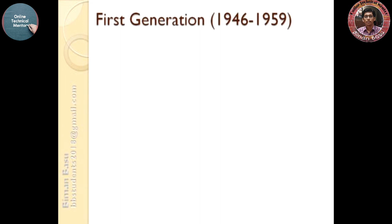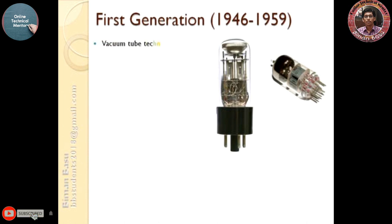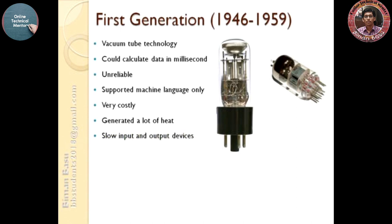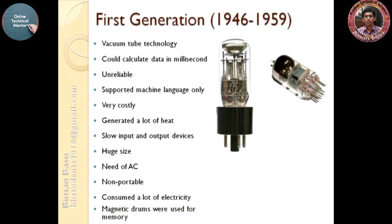First generation: 1946 to 1959. In this generation the computer uses vacuum tube technology and could calculate data in milliseconds. It was unreliable, supported machine language only (0s and 1s), was very costly, generated a lot of heat, had slow input and output devices, was of huge size nearly equal to two or three rooms, required AC, was non-portable, consumed a lot of electricity, and magnetic drums were used for memory.